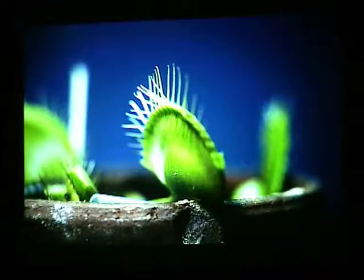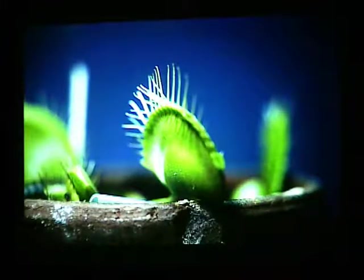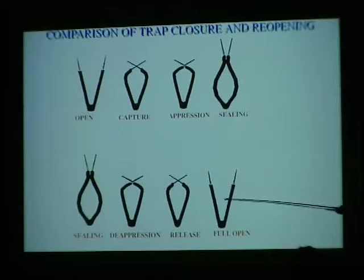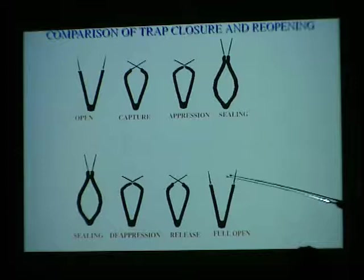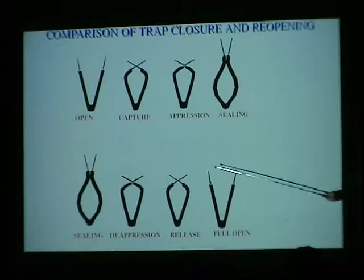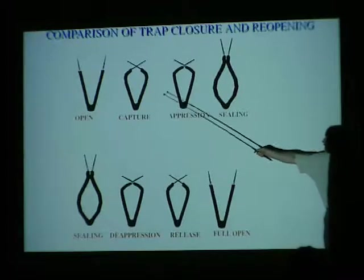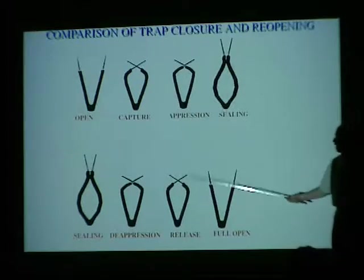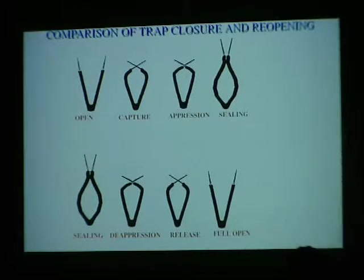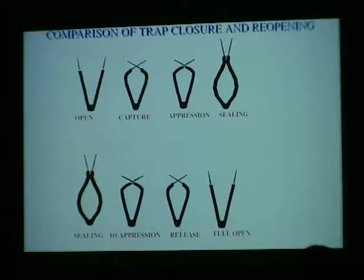If we start with a trap that is closed and sealed, what sort of changes cause the trap to open? I just transposed these figures, but in essence the morphological changes in the trap between closing and reopening are very, very similar. So morphologically, closing and reopening are similar to each other.